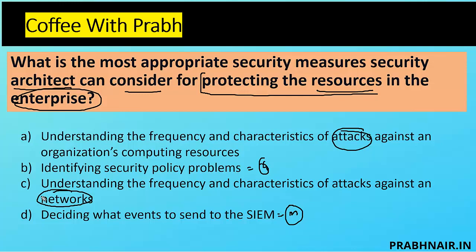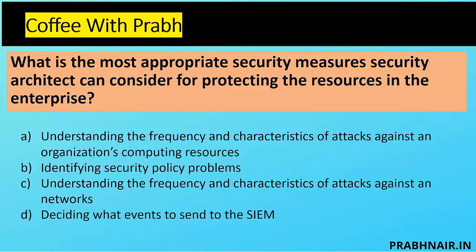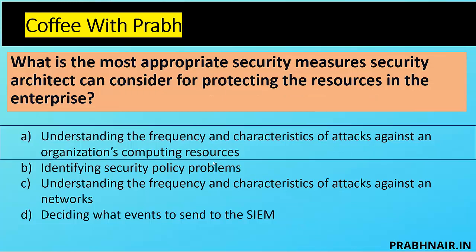D is eliminated due to monitoring scope, C is eliminated because it limits to network only, and B is a governance issue. The most important clause is understanding the frequency and characteristics of attacks against the organization's computing resources. As a security architect, I recommend reviewing frequencies and attack surface analysis, and according to that you can define the security measures. Let's move to the next coffee short.